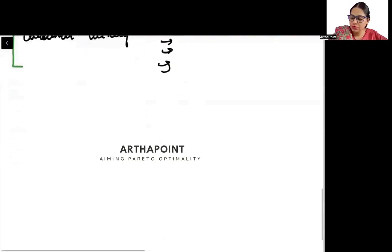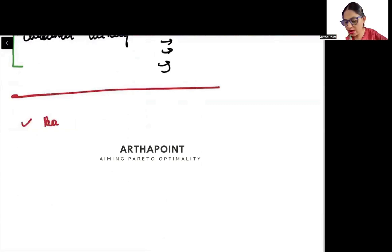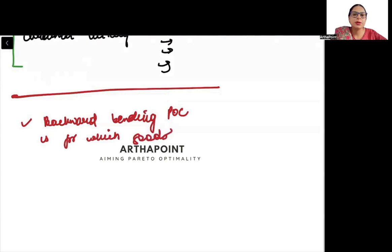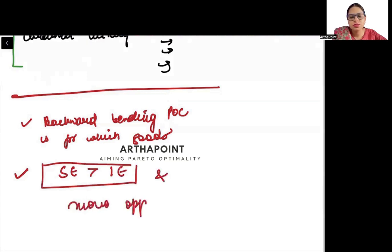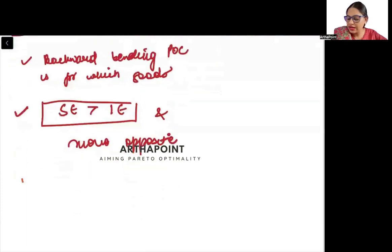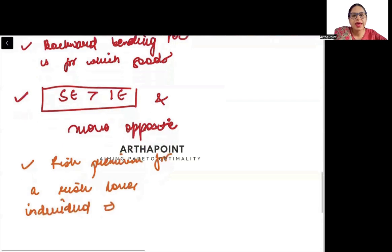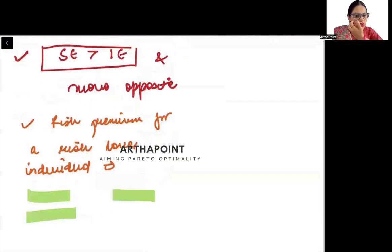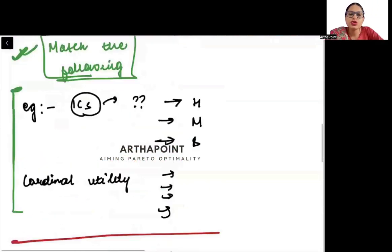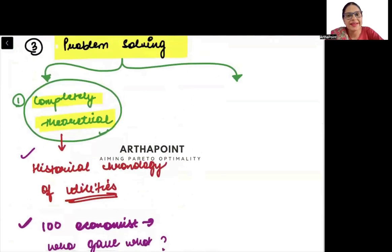Then other kind of theoretical questions. If I ask you backward bending price offer curve is for which kind of goods? Or if I ask you that for which goods substitution effect is more than income effect and they move in opposite direction? Or if I ask you that the risk premium for a risk lover individual will be, and I give you some options - positive, negative, zero, any value. So this kind of questions, these are all theoretical questions, completely everything related to theory.